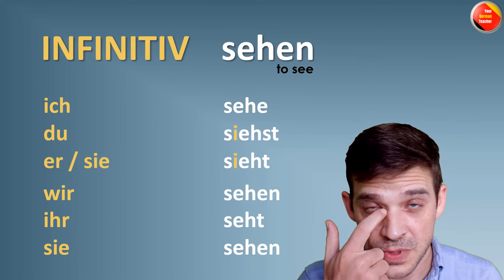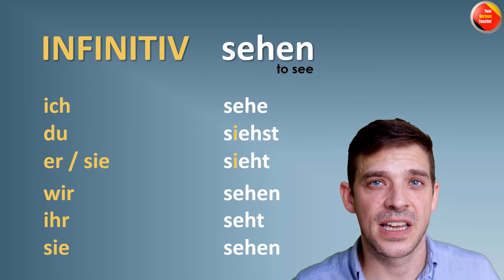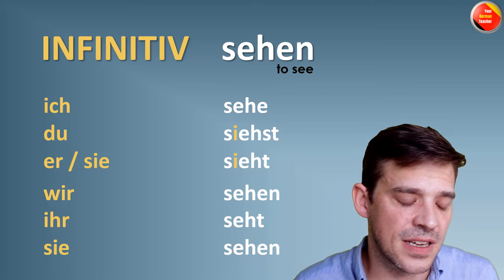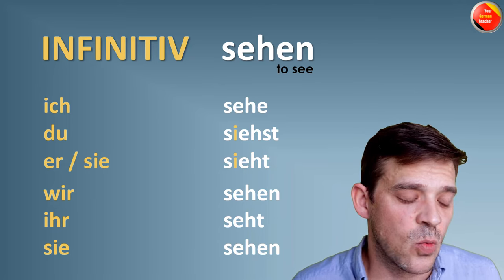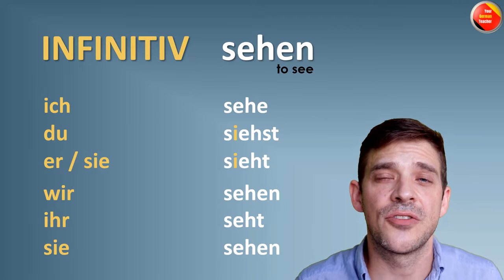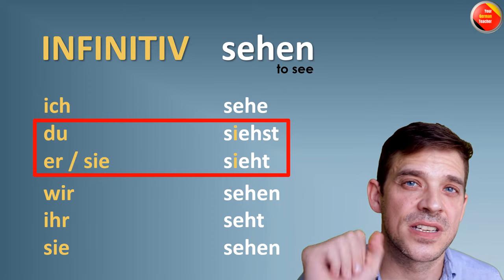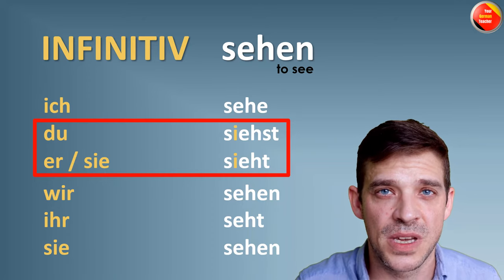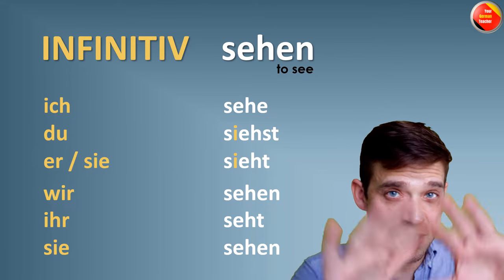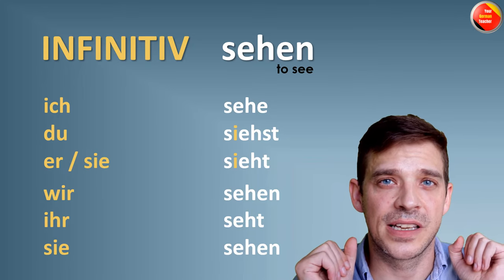Now we're going to do three more verbs. The first one is SEHEN — to see in English. What's important about these verbs: most irregular verbs are only irregular in the second and third person singular — meaning du and er/sie are irregular. The rest is completely regular.